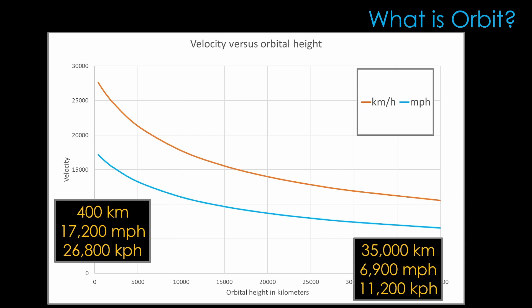Out at 35,000 kilometers, it's 6,900 miles per hour, or 11,200 kilometers per hour, less than half of the velocity than it was at 400 kilometers. The velocity goes down because Earth's gravity is reduced as we move away from it.